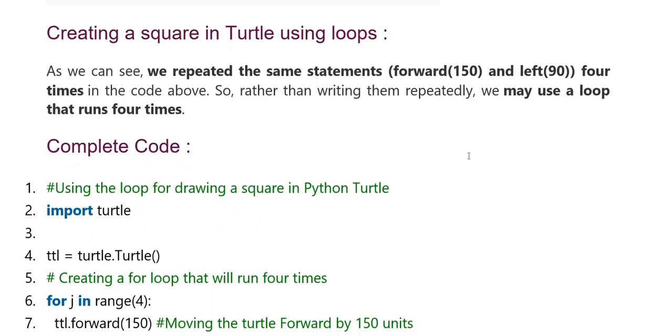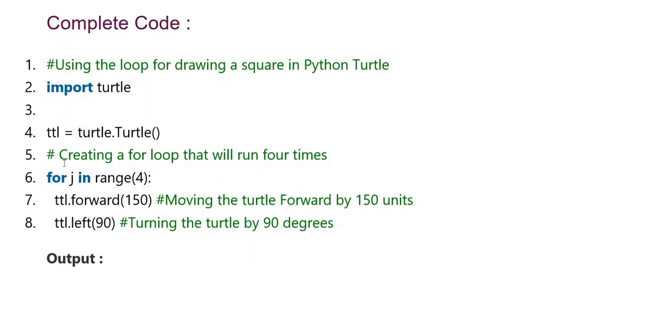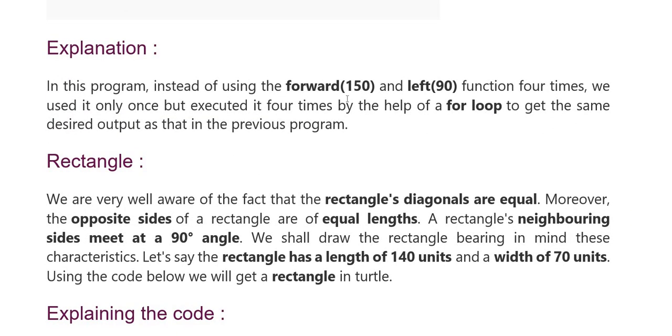Creating a square in turtle using loops. We repeat the same statements forward and left four times in the code above. Further, rather than write it repeatedly, we use a loop that runs four times. Here we have complete code. Same procedure, creating a loop for that we run four times moving forward. Here we have the right side. These are mentioned.